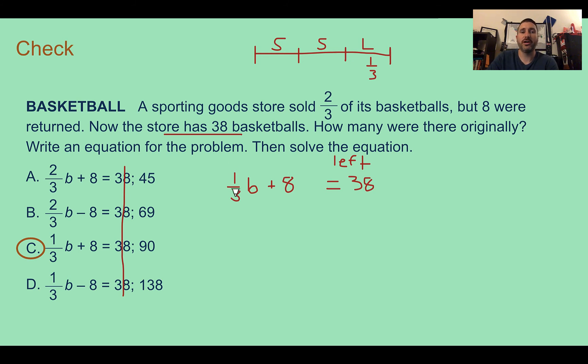So they returned eight basketballs, which means we gained eight more in our total from what they actually sold. So our equation should actually be one-third of the basketballs are left, plus eight more that we returned is equal to 38 total, which ends up being C. And if we were to solve that by subtracting eight from both sides and multiplying by three, then we end up with 90 basketballs.